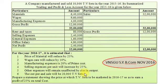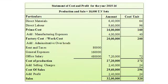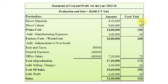Now let us prepare a cost statement or cost sheet for the year 2015-16. Statement of Cost and Profit for the year 2015-16. Production and sales: 10,000 TV sets. Particulars, Amount, and Cost per unit. Direct Materials: Rs. 6,40,000. Per unit it will be Rs. 64 — that is 6,40,000 divided by 10,000 TV sets.